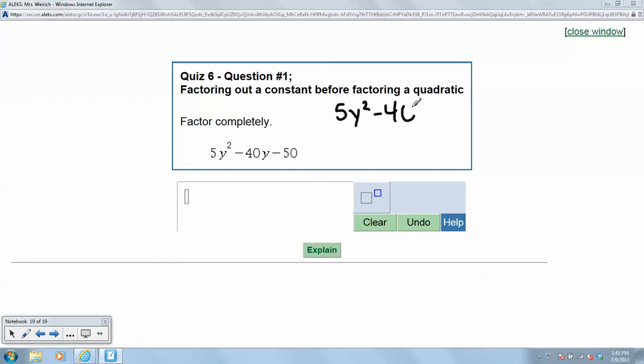So if you notice, if you look at all three of these terms, they're all divisible by 5. So that's what it means by factoring out a constant.